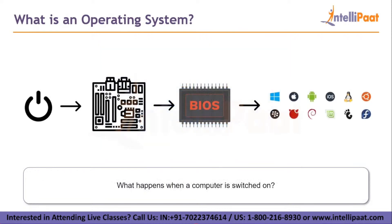Now let's see what happens when a computer is switched on. When the computer is switched on, the power supply sends a signal to the motherboard, which in turn activates the boot process. Here, POST or power-on self-test gets activated and tests every component of the system to check whether it is working or not. This is where you might see LED lights turning on and off. Then the BIOS is activated, which loads the operating system. When all the components are loaded, the operating system takes over.